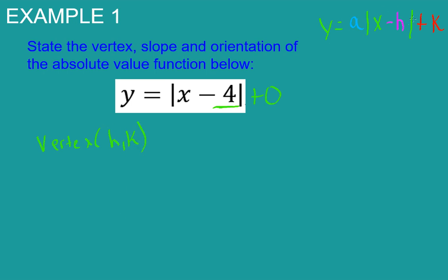So it's the opposite of h. What's the opposite of negative four? That's four. My k, since it's absent, is zero. So there's your vertex.